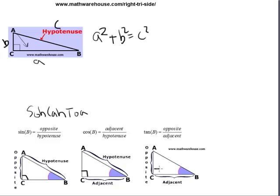Sine - the sine of an angle, for instance the sine of B, is opposite over hypotenuse. Cosine of B is adjacent over hypotenuse. And tan of B is opposite over adjacent.